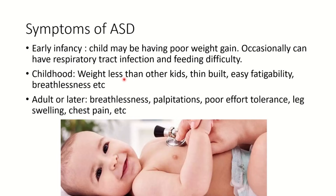The symptoms of ASD begin quite early in infancy. Babies who have large ASD generally have weight less than they should have — they are a little thin built. Generally a baby grows around 600 grams to 1 kilogram per month; this baby grows a little slower than that. They are not very symptomatic but very often we see respiratory infections or feeding difficulties. As the baby grows to three, four, five, six years old, their weight is generally less than other kids. They are thin built, fragile, and tire easily.